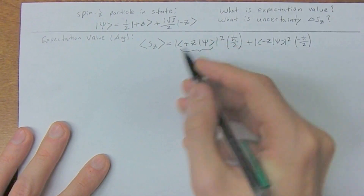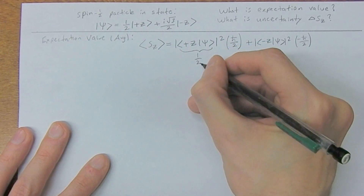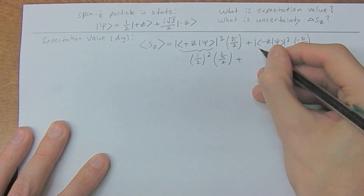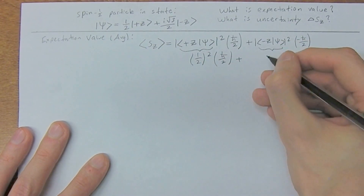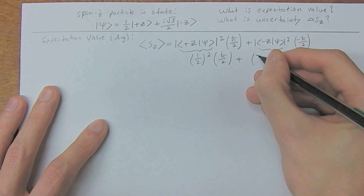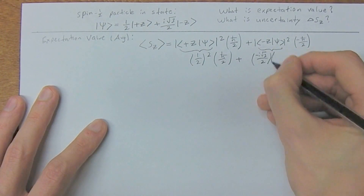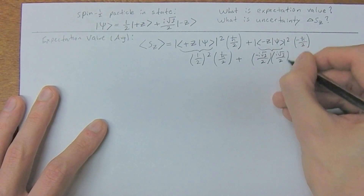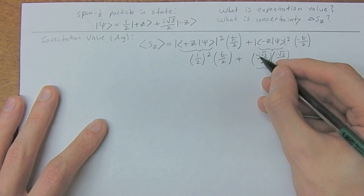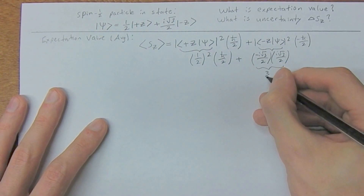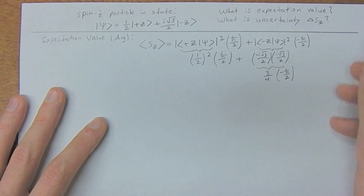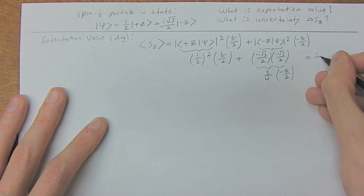This term — as we know from the last video — equals one-half with no imaginary part, so it's one-half squared times h-bar over two. This term again from the last video is i times square root of three over two, and remember we multiply by the complex conjugate, so negative i times square root of three over two, times i times square root of three over two. This gives us i squared equals negative one, and negative one times negative one makes positive, so we get three over four. We then multiply by negative h-bar over two.